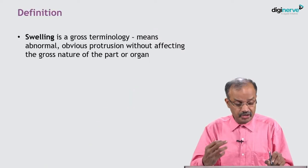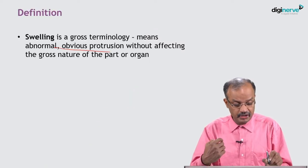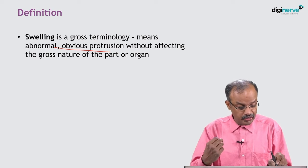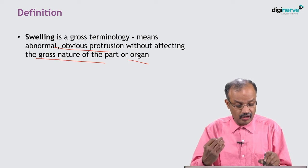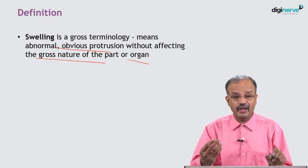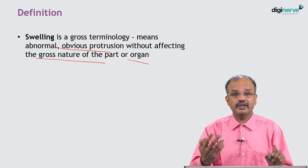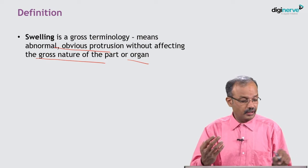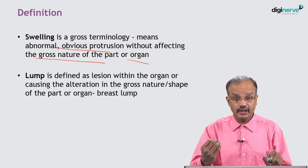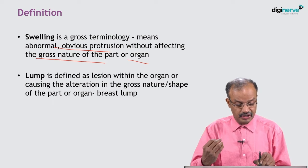Swelling is a gross terminology meaning an abnormal, obvious protrusion without affecting the gross nature of the part or organ. This is very important — it does not affect the gross nature of the part or organ. Even though we commonly use 'swelling,' in certain situations we use other terminology like 'lump' or 'mass.' A lump is defined as a lesion within the organ or one causing alteration in the gross nature or shape of the part or organ.